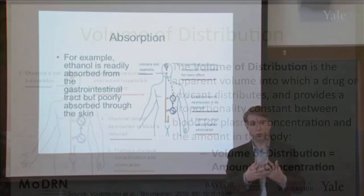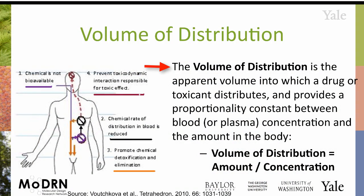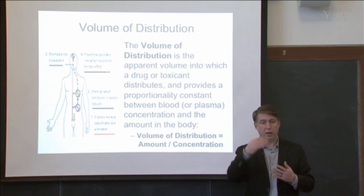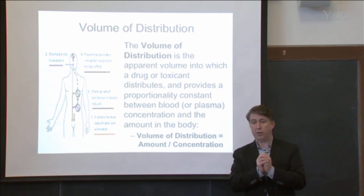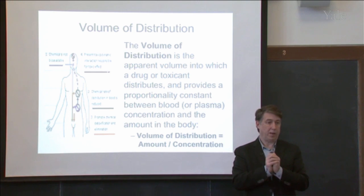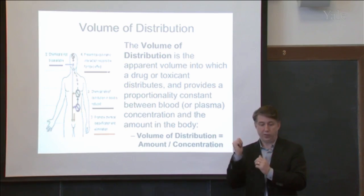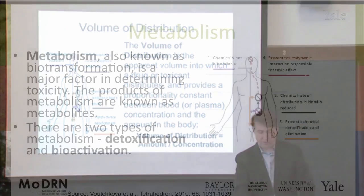Absorption is crucial. Volume of distribution is the apparent volume into which a drug or toxicant distributes throughout your body — whether it's blood or plasma. It's one thing if I ingest something and it goes right through and gets excreted. That's not the same as it being distributed into my blood and serum and being able to spread throughout. The ability to be distributed is crucial.